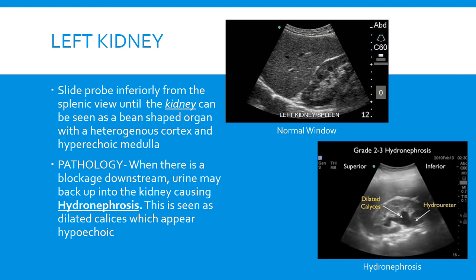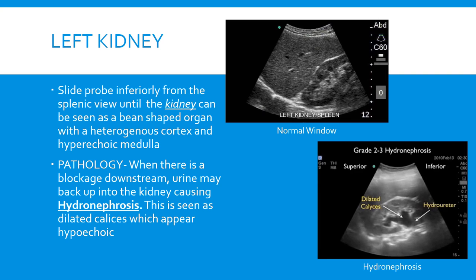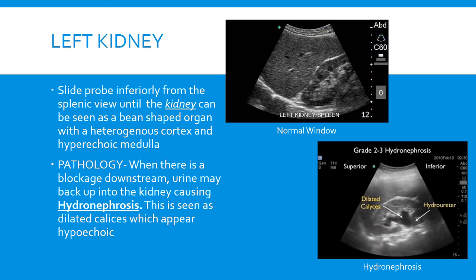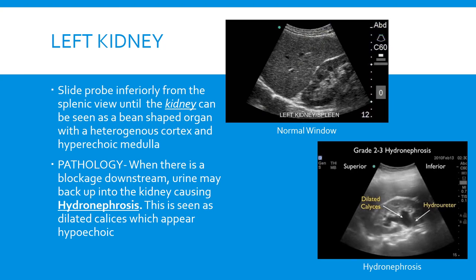Just like when finding the right kidney, to find the left kidney we slide the probe a little bit inferiorly until the kidney comes to the center of the screen. Once again we're looking for hydronephrosis, which is seen as dilated calyces showing up as a hypoechoic signal in the medulla of the kidney.